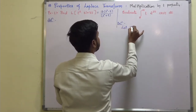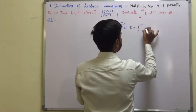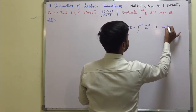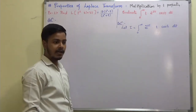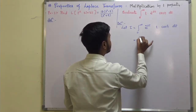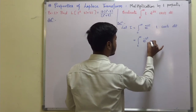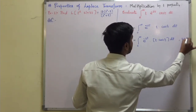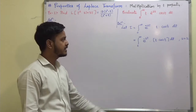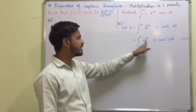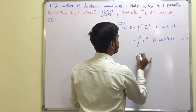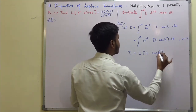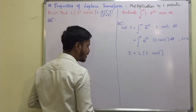For the second problem, let I equal the integral from 0 to infinity of e to the power minus 2t times t cos(t) dt. I can write this as the integral from 0 to infinity of e to the power minus st times t cos(t) dt with s = 2. This is nothing but the Laplace transform of t times cos(t), evaluated at s = 2.